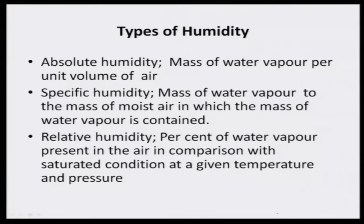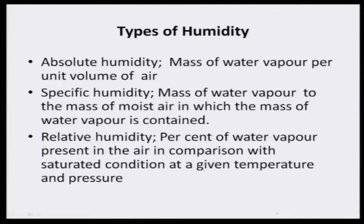Humidity can be defined as the amount of water vapor present in the air, and it can be defined in three ways. One is absolute humidity — the mass of water vapor per unit volume of air. Another is specific humidity — the mass of water vapor relative to the mass of moist air in which the water vapor is contained. The third is relative humidity.